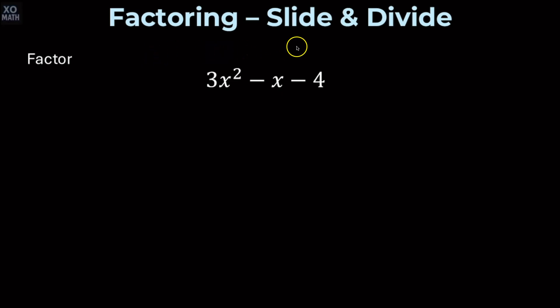Let's learn a factoring shortcut called slide and divide. We want to factor 3x squared minus x minus 4. This is a good candidate for this method because we use it when the leading coefficient, the number in front of x squared, is something other than 1.